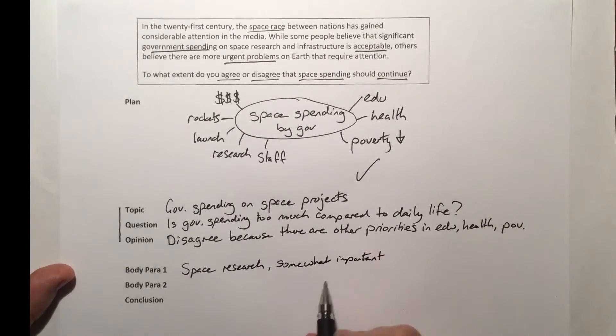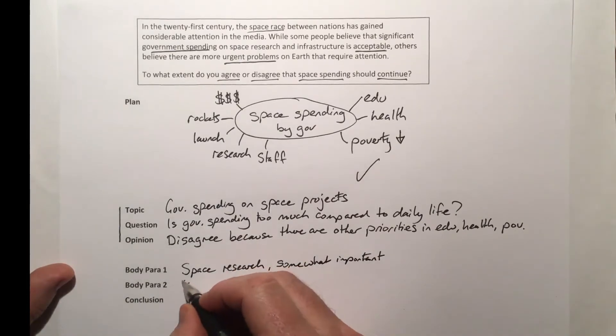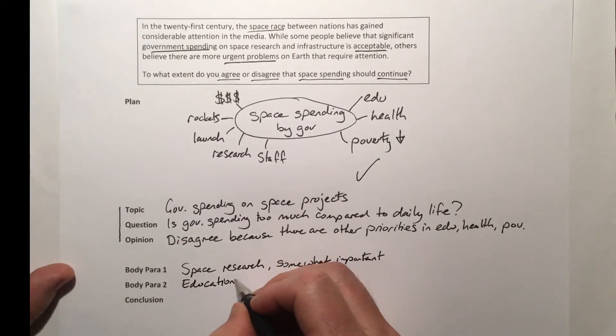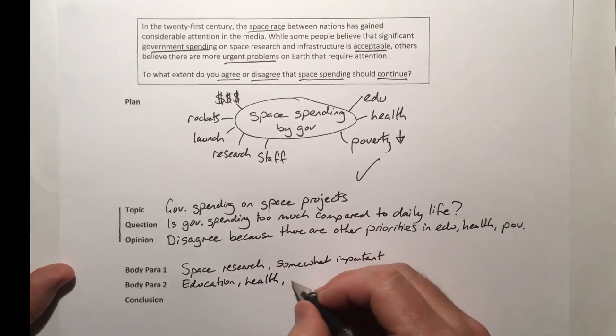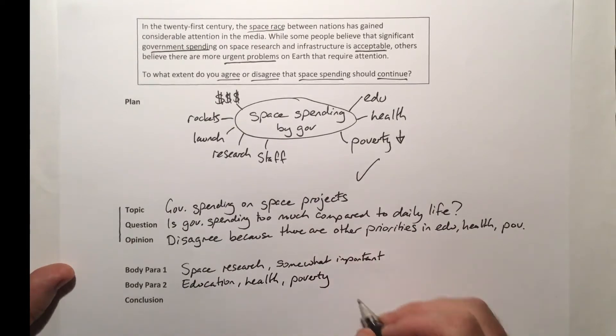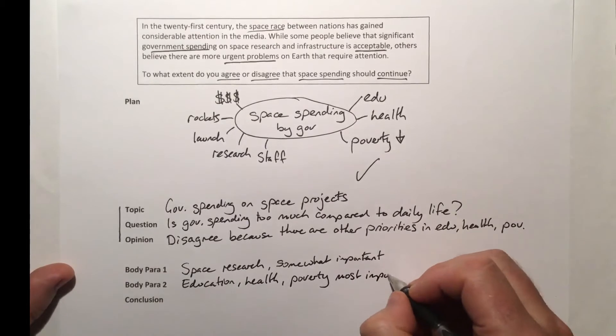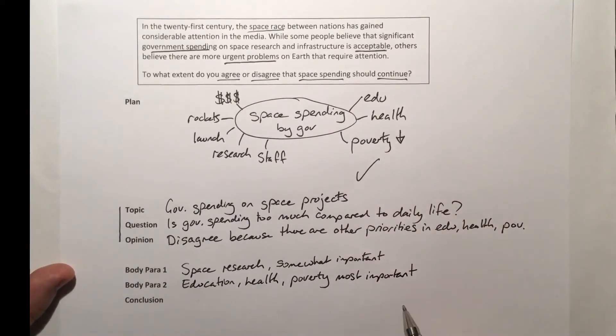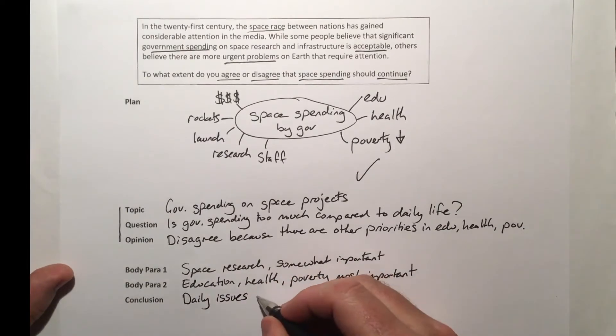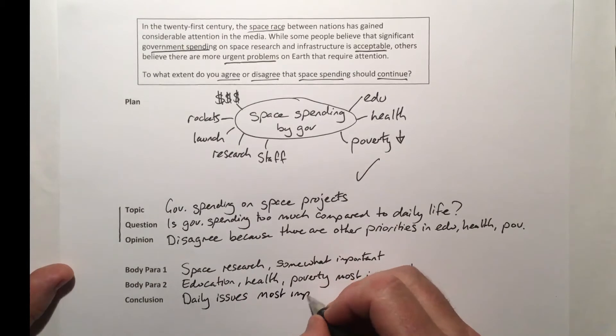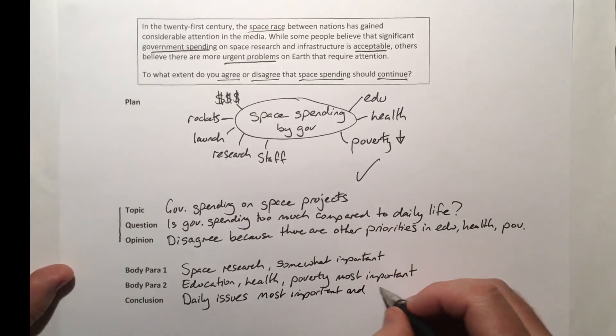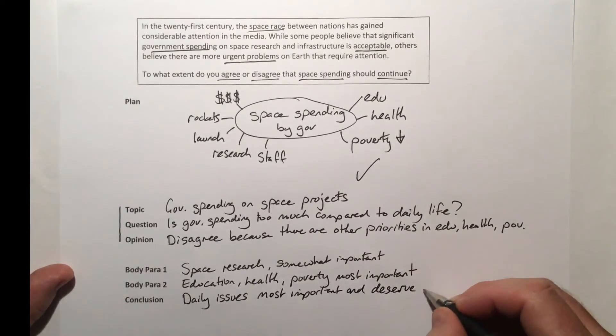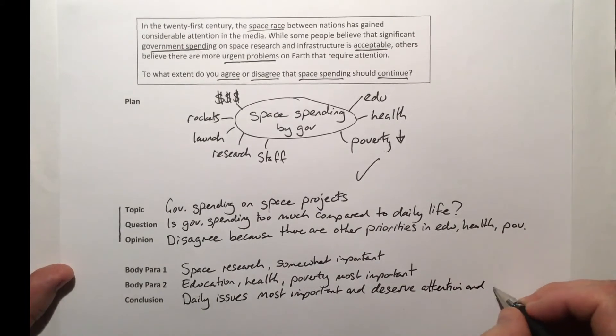but it's not going to be my strongest paragraph. My strongest paragraph really is going to be about education, health, and poverty. These are the most important aspects that I wish to emphasize in my essay. And then in my conclusion, I need to recap and sum up. I'm going to say something like: the daily issues are the most important and deserve attention and spending.